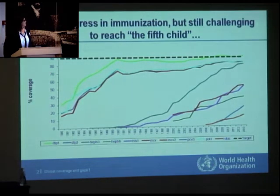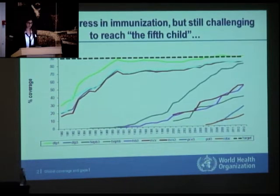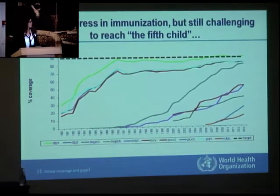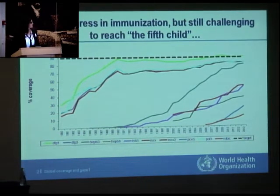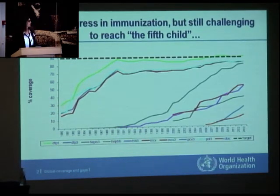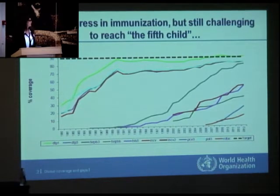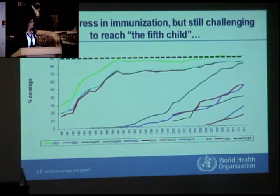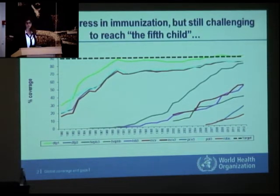Let me start with the slide Thomas already showed you, which shows the great progress on immunization coverage over the years from different antigens. The target goal is 90% at the global level and in all countries. The top part of the chart shows the traditional vaccines — DTP three doses, three doses of polio, one dose of measles — and the highest green line shows coverage from the first dose of DTP vaccine.